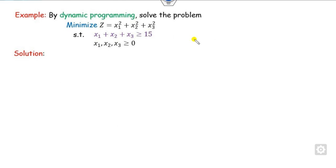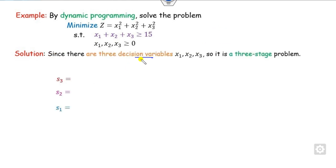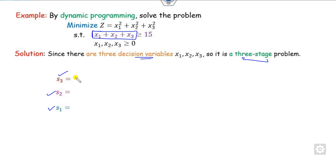First of all, you have to identify how many decision variables there are. This problem clearly has 3 variables: x1, x2, x3. So it is called a 3-stage problem. We define states s1, s2, and s3. What is s3? It is whatever the constraint consists of — x1, x2, x3 — so that is my x3 here.